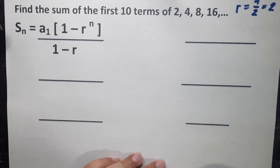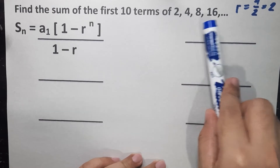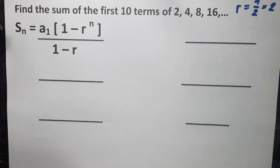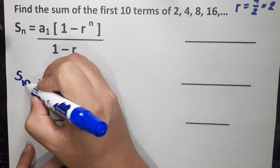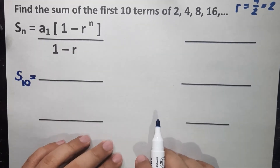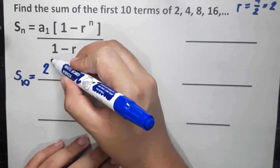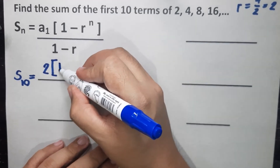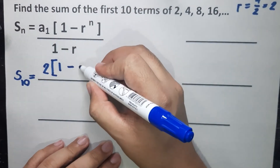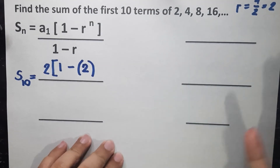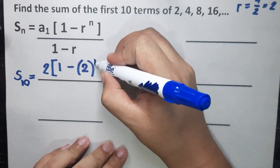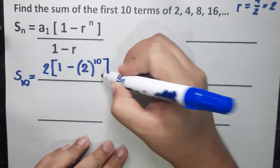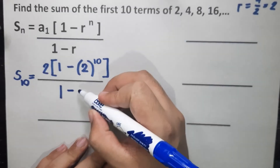You can also identify it manually: 2 times 2 is 4, 4 times 2 is 8, 8 times 2 is 16. So common ratio is 2. Now let's solve for the sum of the first 10 terms. S sub 10 equals A sub 1, which is 2, times the bracket 1 minus 2 raised to the power of 10, divided by 1 minus 2.